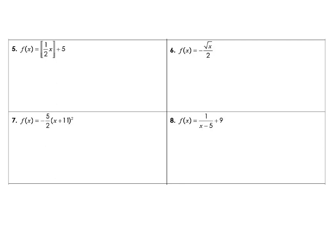Number 5 – we have our parent function is that step function, and that is new to us this year. Notice how you make your brackets – do make sure you put that extra line on the inside. That's your step function. And then for our transformations, notice that that 1 half is on the inside, and so this is going to slow down the growth rate, so this is going to be a horizontal stretch by 2 – it is, again, the reciprocal – and then we're going to go up 5.